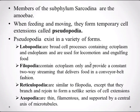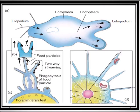To summarize the different forms of pseudopodia: the lobopodia are broad cell processes containing both ectoplasm and endoplasm, used for engulfing food and locomotion. The filopodia contain only ectoplasm and deliver food by moving in a conveyor belt fashion. The reticulopodia are similar to filopodia but are branched and rejoined to form a net-like extension. The axopodia are thin, filamentous, and supported by a central axis of microtubules.